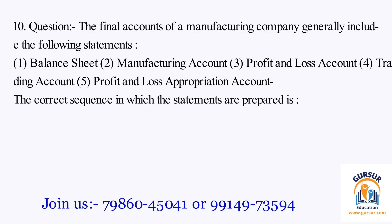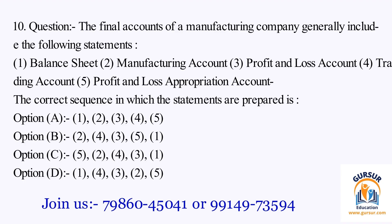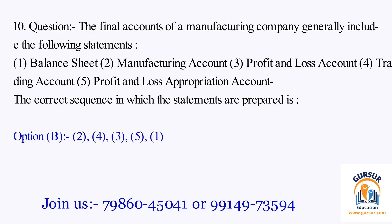Question number 10. The final accounts of a manufacturing company generally include: 1. Balance Sheet, 2. Manufacturing Account, 3. Profit and Loss Account, 4. Trading Account, 5. Profit and Loss Appropriation Account. The correct sequence in which the statements are prepared is: Option A: 1,2,3,4,5. Option B: 2,4,3,5,1. Option C: 5,2,4,3,1. Option D: 1,4,3,2,5. The right answer is Option B, that is 2,4,3,5,1.